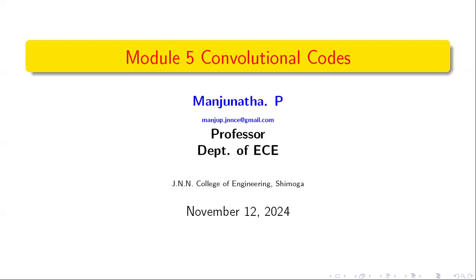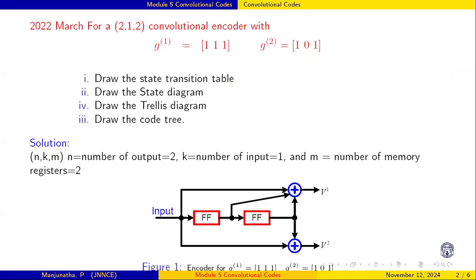In convolutional codes, we will see how to draw the code tree, the Trellis graph, state diagram. We will see one example of how to draw the state transition table, state diagram, Trellis diagram, and code tree.